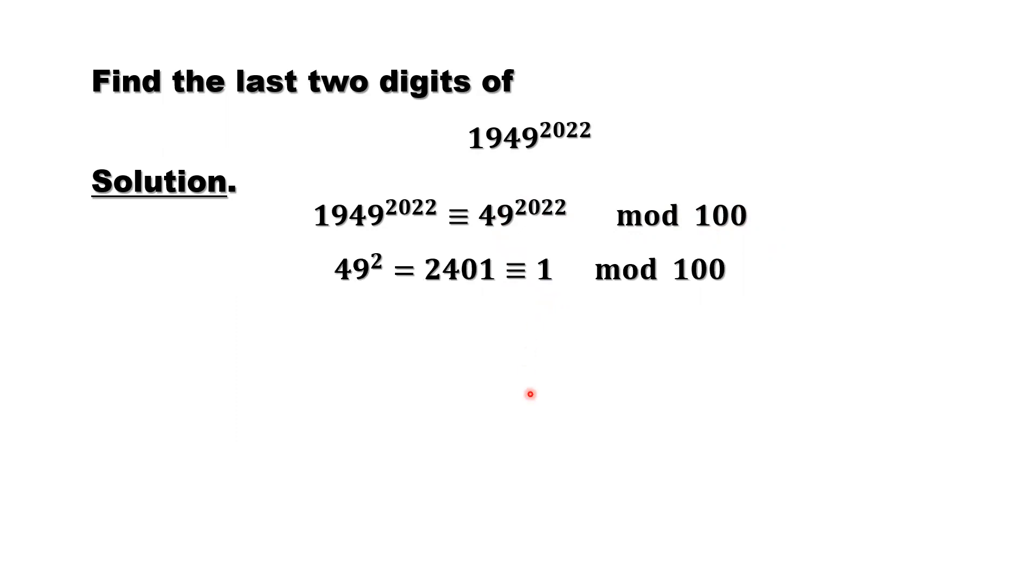This is a very important result here. 49 squared equals 2401. We can see the last two digits, that's 01. Divide by 100, the remainder is 1. 1 means the last two digits are 01.